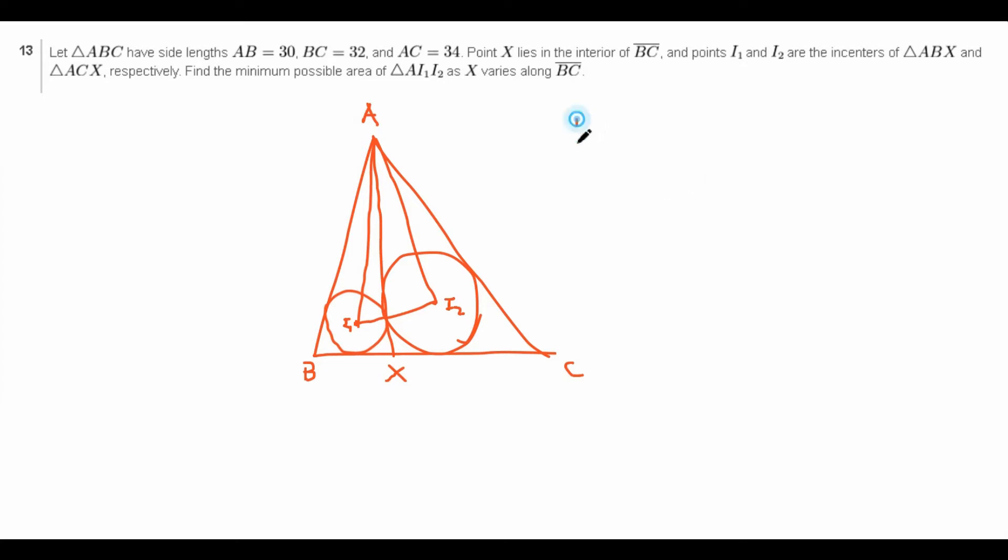So we have to think of another way to find the area. Well, using Huron's formula, we still have to find I1, I2, which is not good. So what else can we use? Well, we can use 1 half AB sine C, because that also finds the area of the triangle, and it also avoids one of the sides. In particular, we want to avoid I1, I2, because it's kind of hard to calculate that distance.